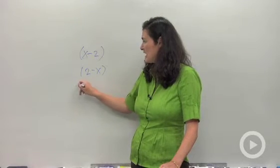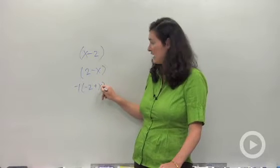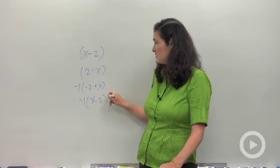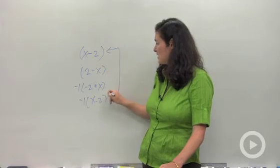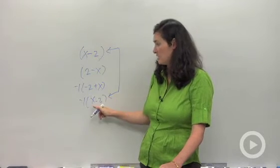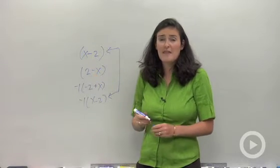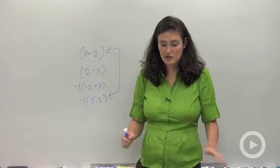I would see negative 1 times negative 2 plus x, which is the same thing as negative 1 times x minus 2. Now you can see that those are what we call opposite factors. This guy just got multiplied by negative 1. That's something that'll help you when you're simplifying rational expressions.